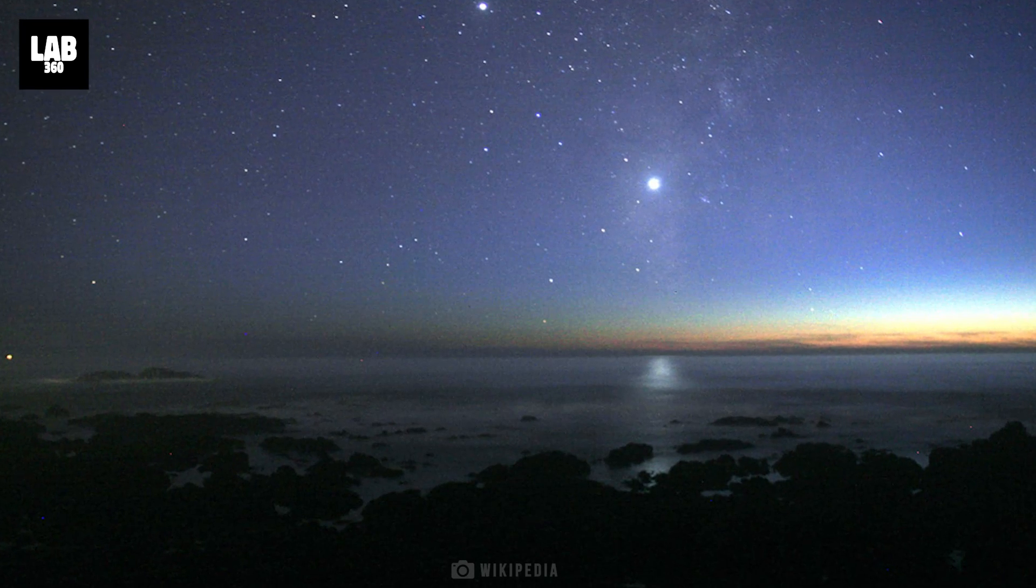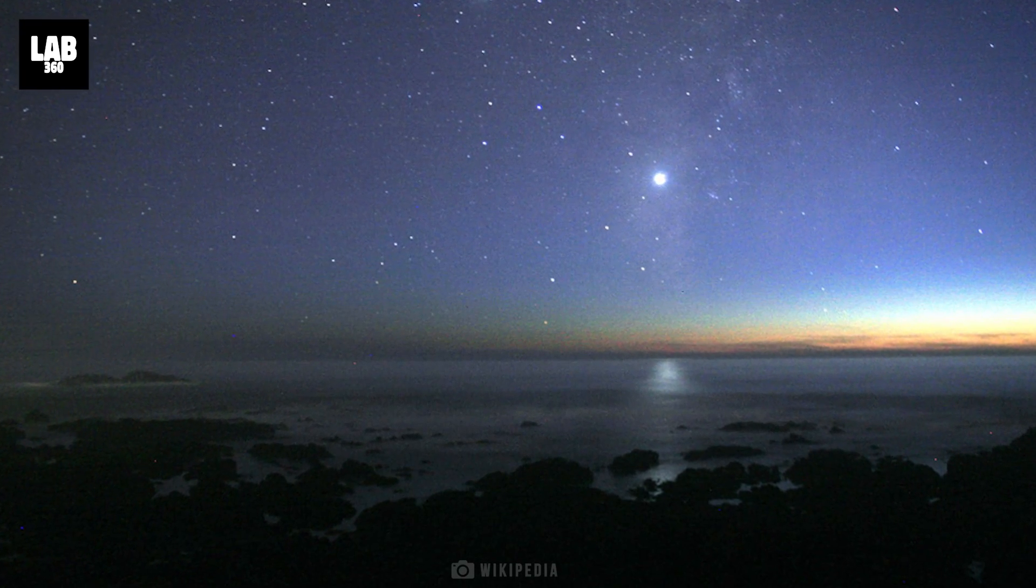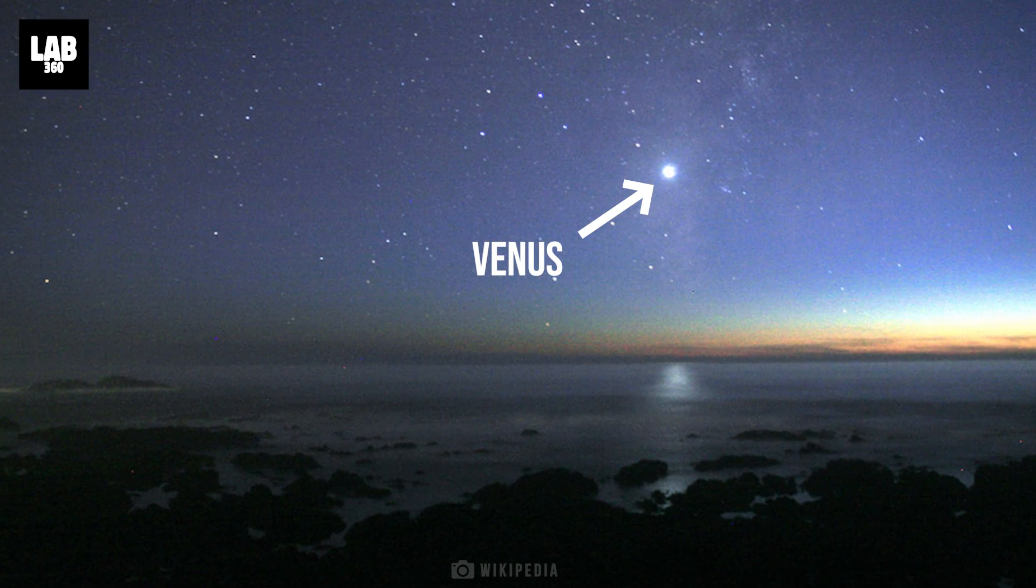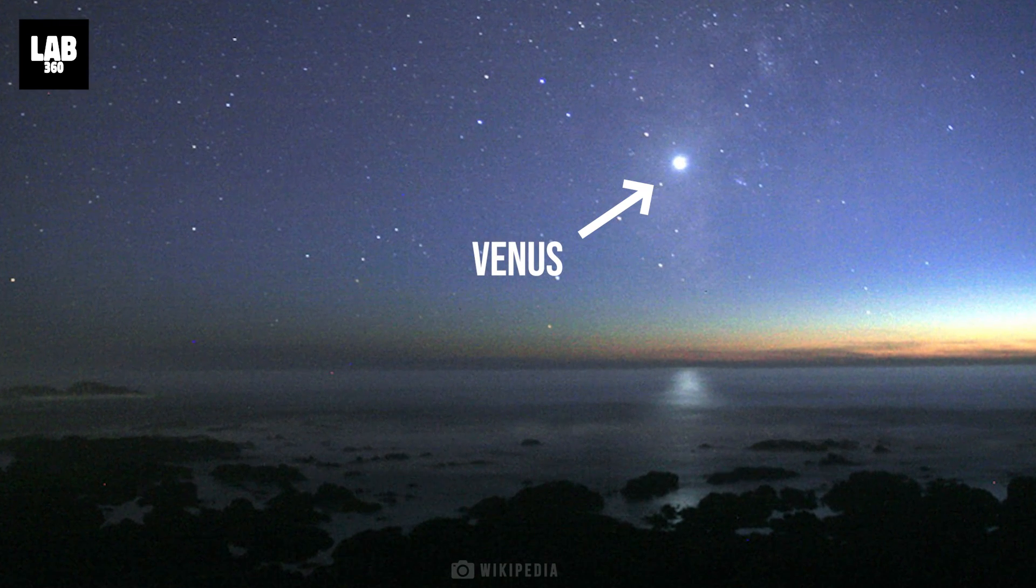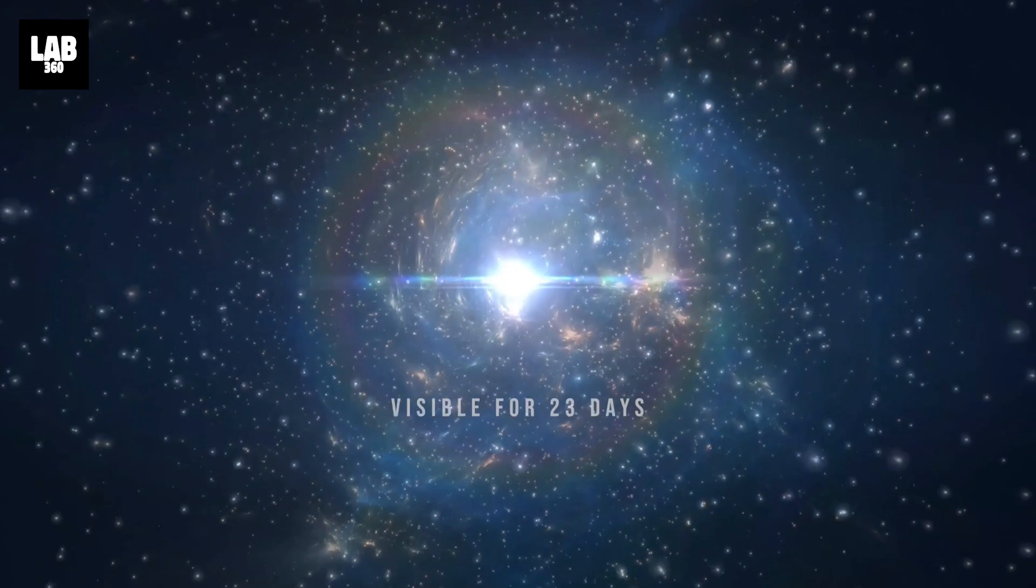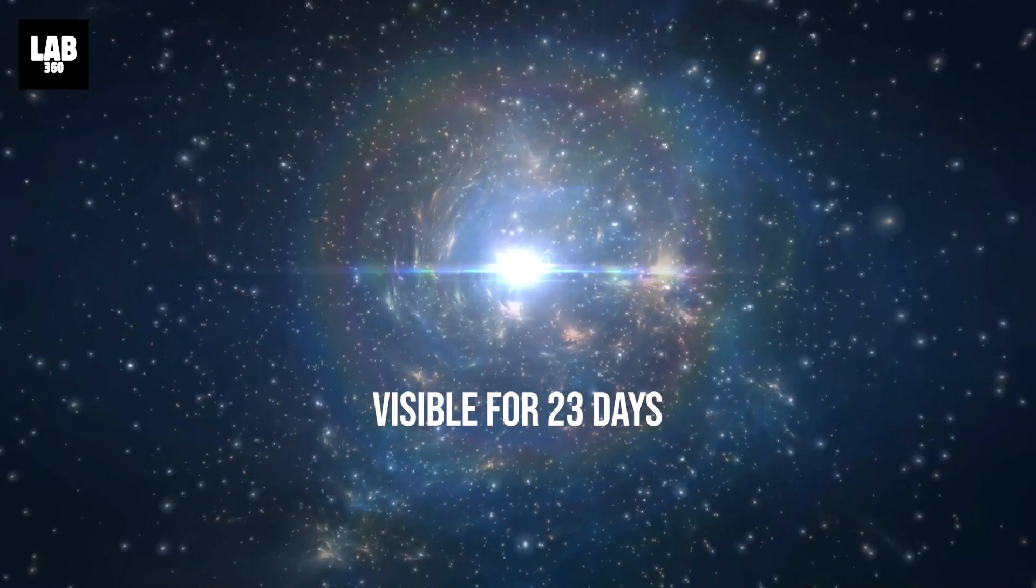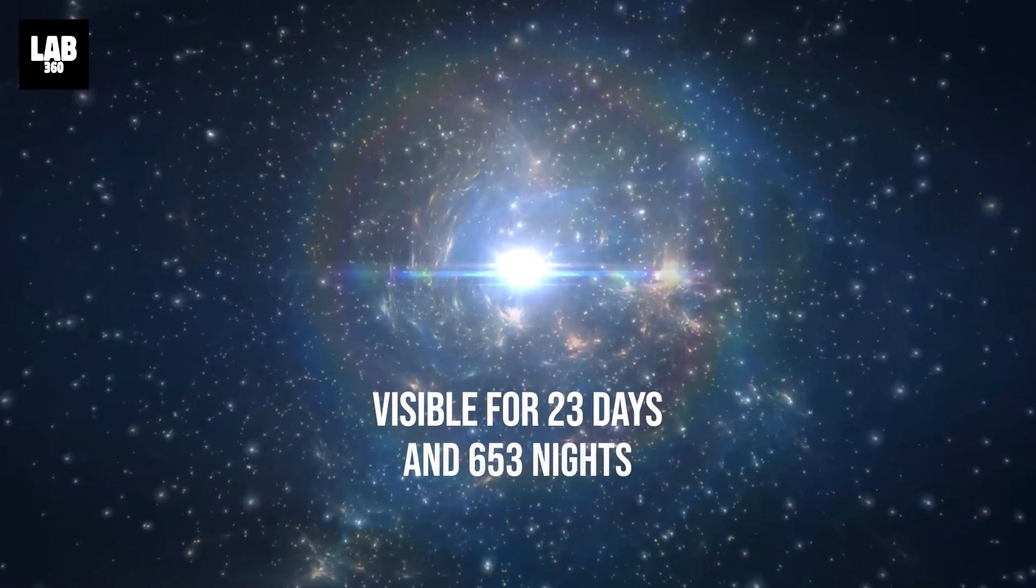It is recorded to have been four times as bright as Venus in the night sky, Venus being the brightest object in the sky after the sun and the moon. It is recorded to have been visible during the day for 23 days, and in the night sky for 653 days.